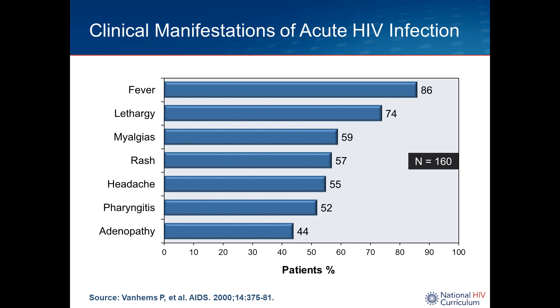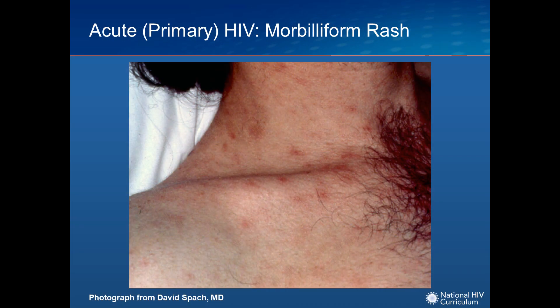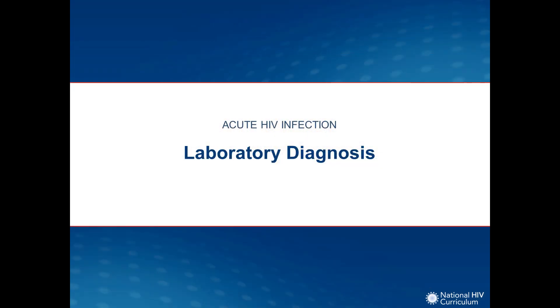I tend to think of this as a mononucleosis-like illness — a lot of people describe it as a flu-like or mononucleosis-like illness. If a rash is present, that also helps in drilling down to think about acute HIV. The rash looks somewhat like a syphilis rash or a measles rash, and is very nonspecific — it could look like a drug eruption. The key is to tie a recent exposure with a mononucleosis-like illness, perhaps with a rash, to think about acute HIV.